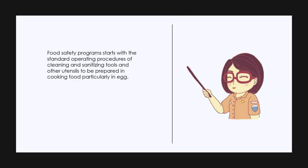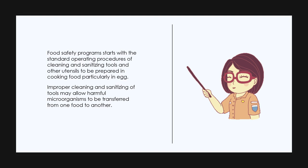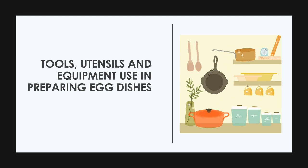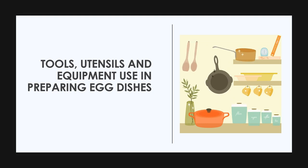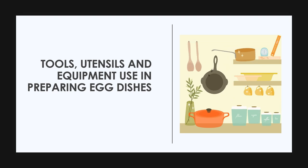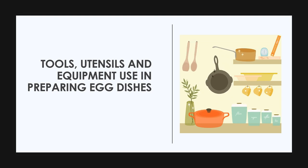A food safety program starts with the standard operating procedures of cleaning and sanitizing tools and utensils used in cooking food, particularly eggs. Proper cleaning and sanitizing of tools prevents harmful microorganisms from being transferred from one food to another. Now let us proceed to discuss the tools, utensils, and equipment used in preparing egg dishes. Using appropriate kitchen tools and equipment is a great help in maintaining cleanliness and orderliness in the workplace.